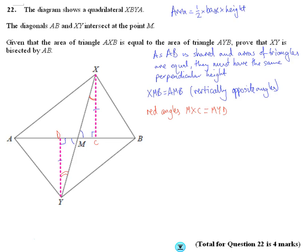And so what we've got now is, if that's true, we've got an angle, a side and an angle. So we've got angle side and angle congruency.